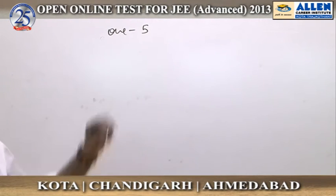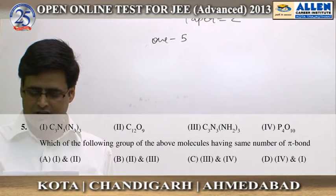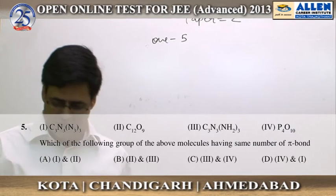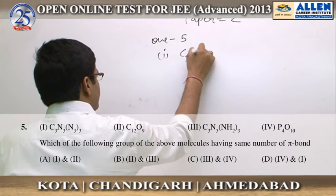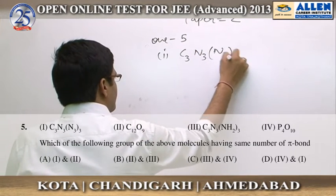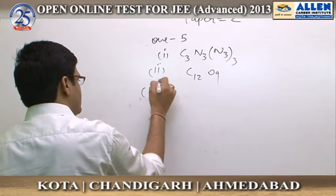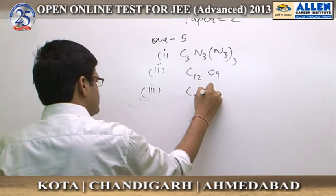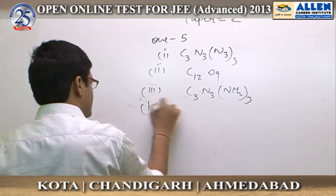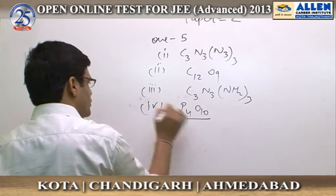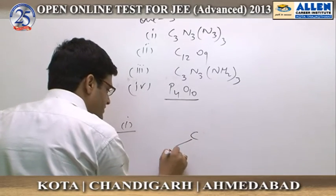Paper 2, question number 5: which of the following group of the above molecules has the same number of pi bonds? Options are given — first, second, third, and fourth. Now, the structure of the first compound — it is a cyclic compound.